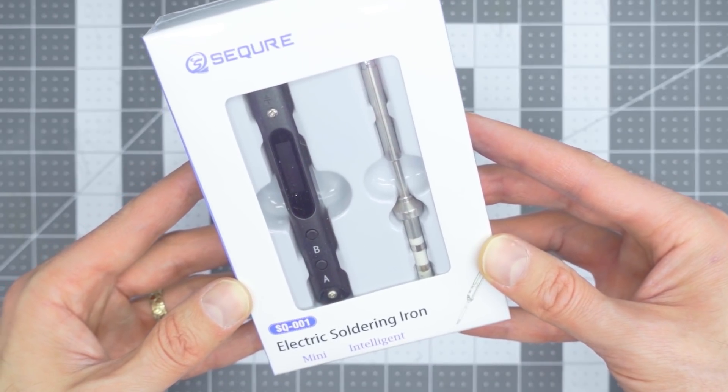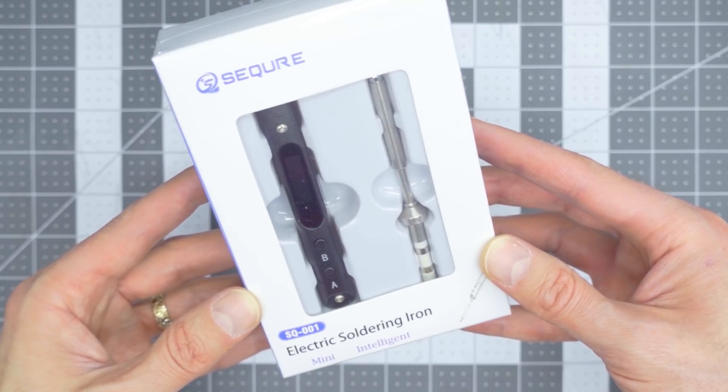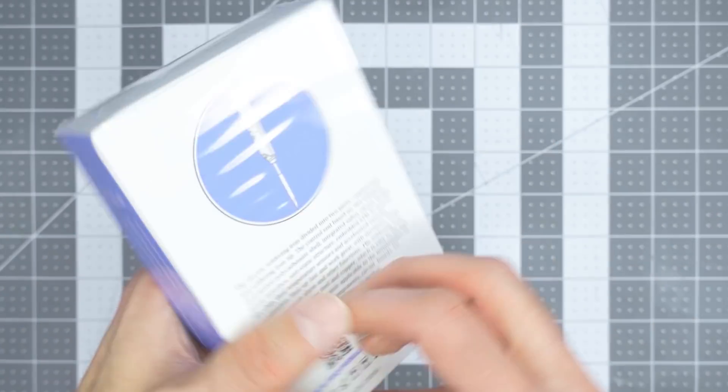Welcome back to the Scaled Builders Guild. Thanks again for watching. Today we're taking a look at the Secure SQ-001 electric soldering iron.